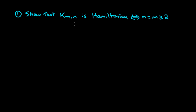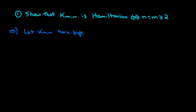This first problem asks to show that the complete bipartite graph with partite sets of size M and N is Hamiltonian if and only if those two partite sets have the same size and have at least two vertices in each of the partite sets. We'll start off with saying that K(M,N) can have bipartition X and Y, where obviously the size of X is N and the size of Y is M.